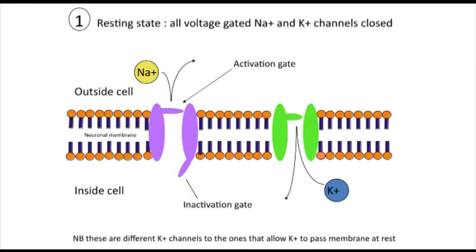Action potentials are usually generated by the opening and closing of voltage-gated ion channels — that is, ion channels that open and close in response to a change in voltage or potential difference across the membrane. The two main types of voltage-gated ion channels responsible for action potentials are voltage-gated potassium channels and voltage-gated sodium channels.